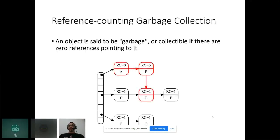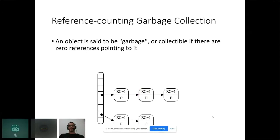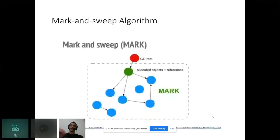In reference counting garbage collection, an object is considered garbage if there are zero references pointing to it. For example, if A has zero references it is cleared, B is cleared, and the reference counter for D is decremented by one. The problem with reference counting is circular references — if two objects reference each other, they'll never reach zero references and won't be collected.